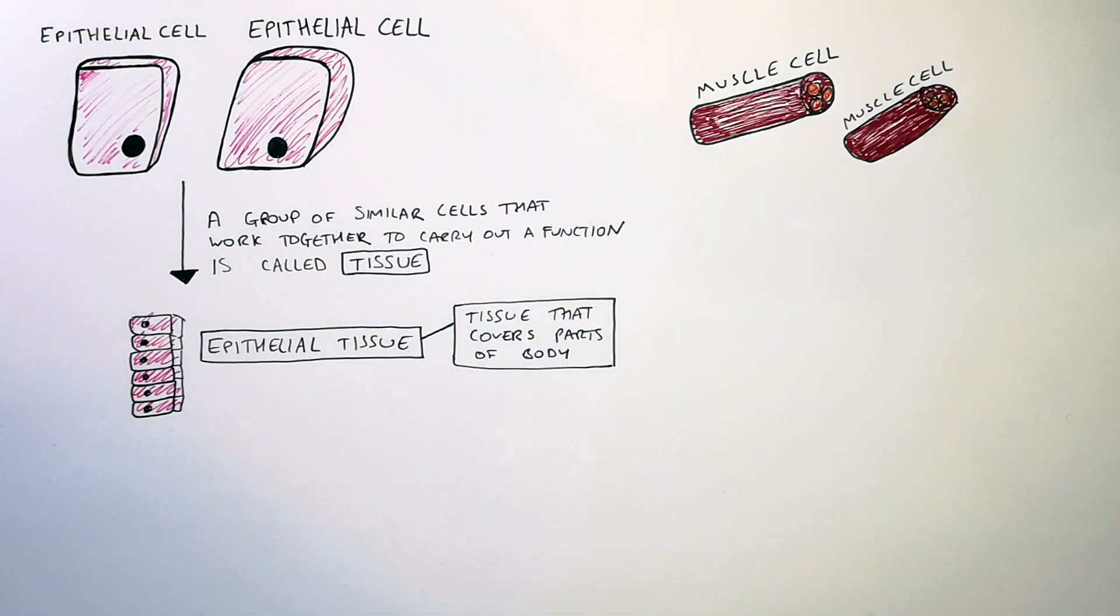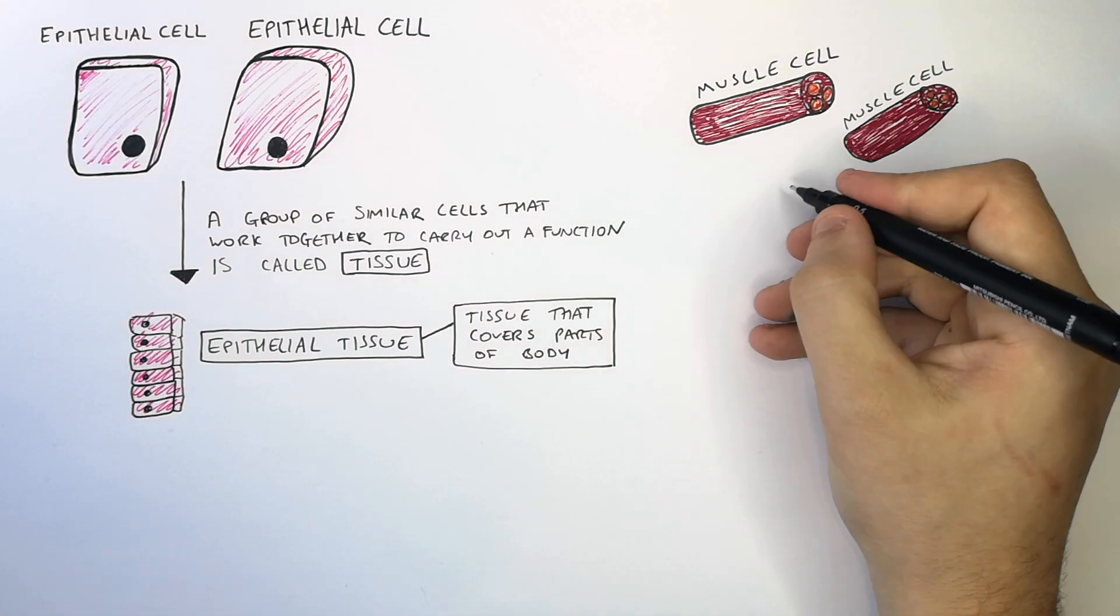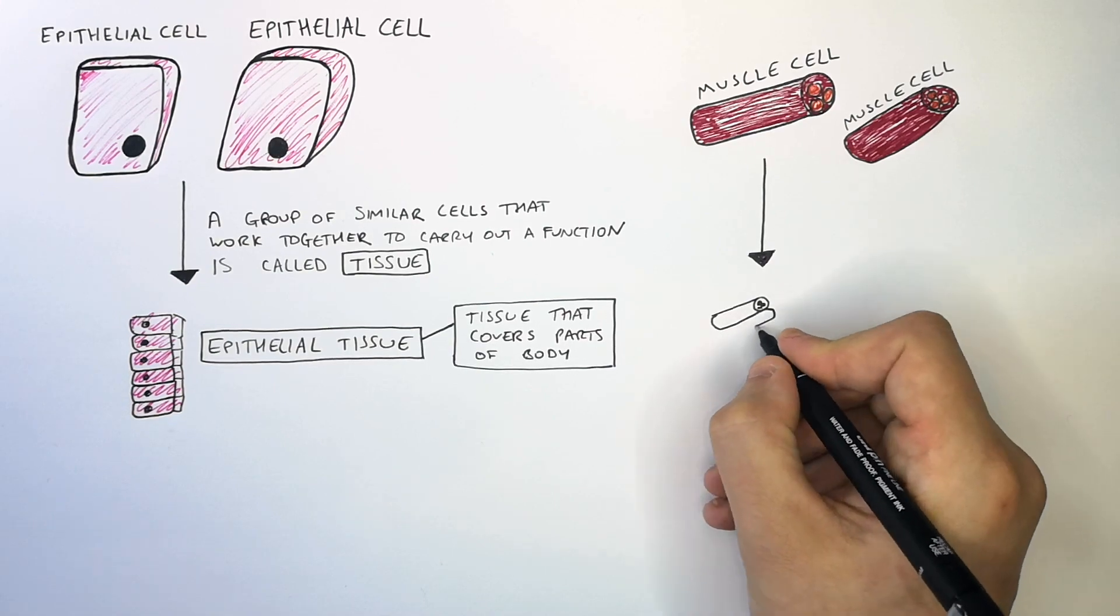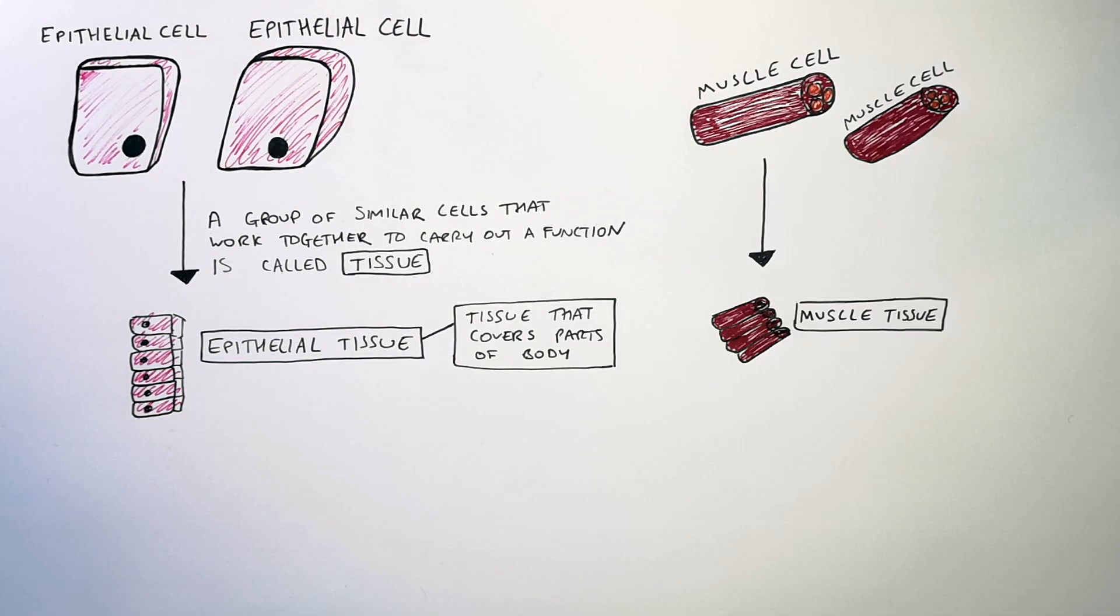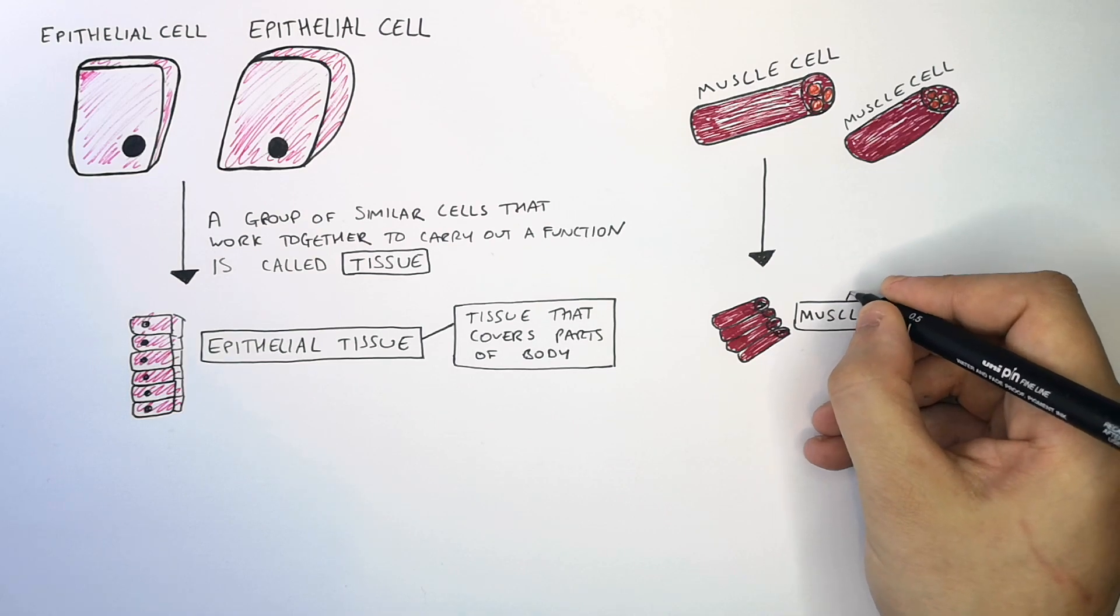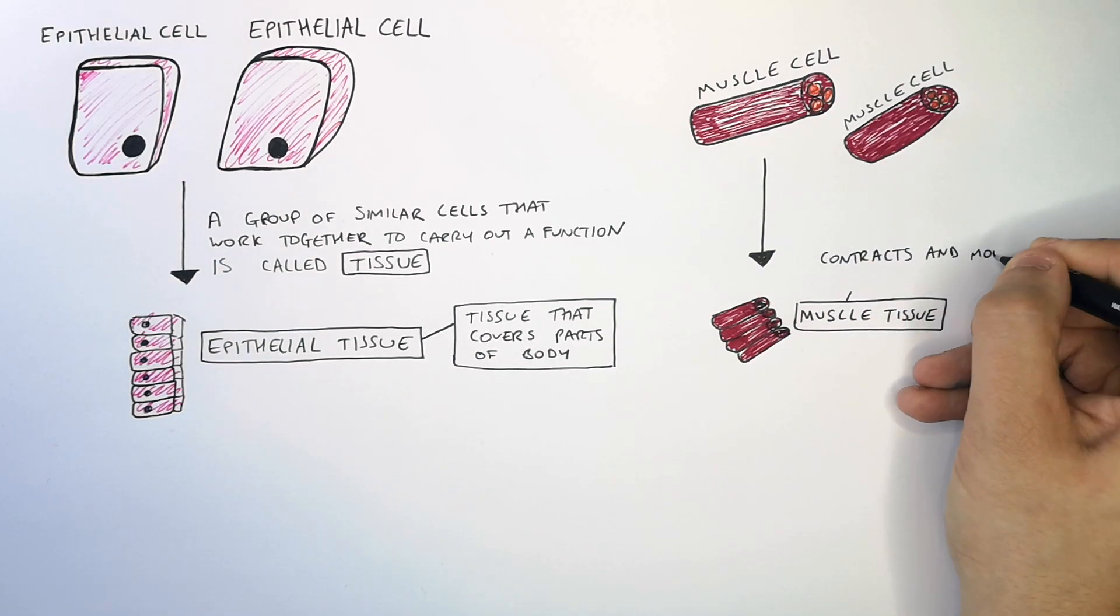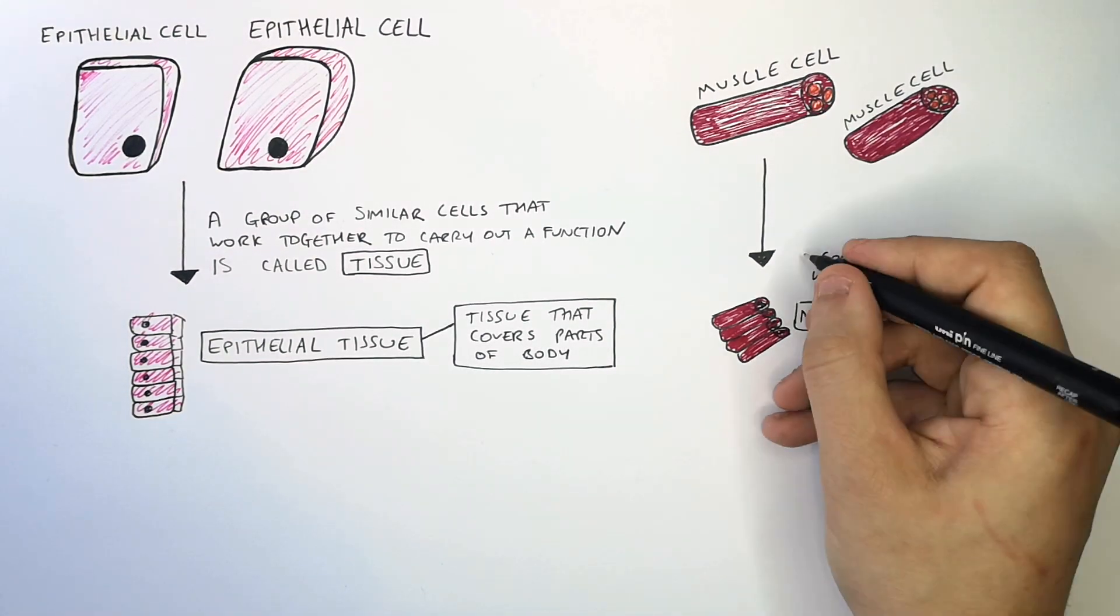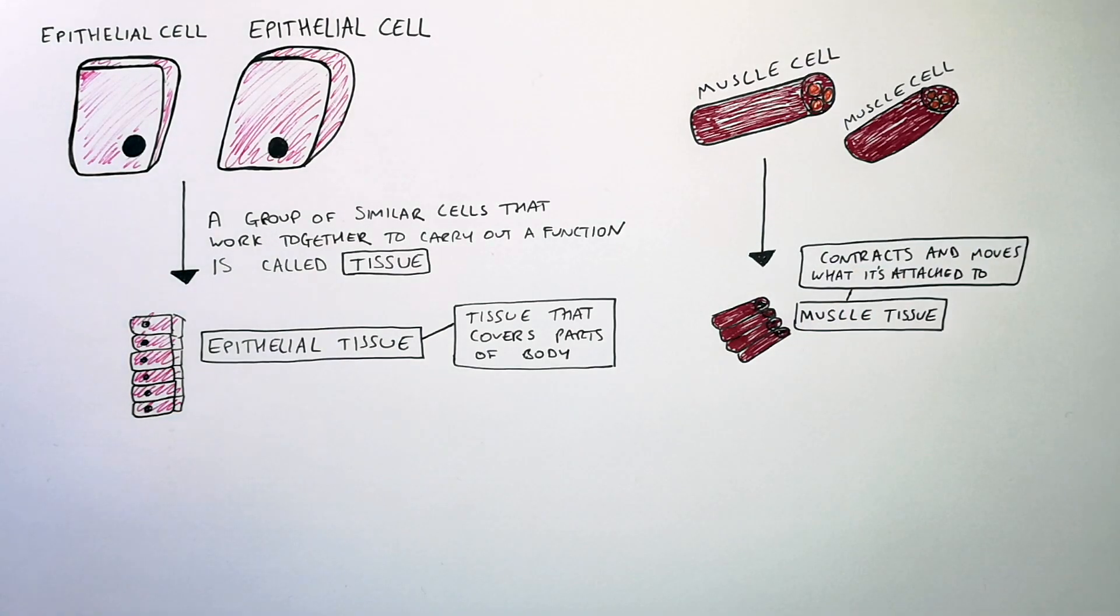These here are muscle cells, individual muscle cells. When there is a collection of muscle cells that forms muscle tissue. Muscle cells work as muscle tissue and they act to contract and relax and move whatever they are attached to. Remember, when the muscle tissue contracts it moves whatever it is attached to.